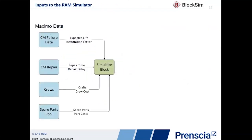All this information in Bloxim gets put together into a simulation block, and Maximo provides a lot of that key information to give us the most accurate representation of overall system performance. In addition to our failure data, we can get repair time information, repair delay information, information on the crews involved in the work, the relative costs, the time required to make the repair, and information on spare parts. All of that can be brought into the simulation block to make the most realistic estimation of what's actually happening in your overall system.